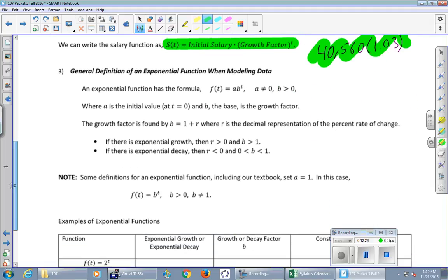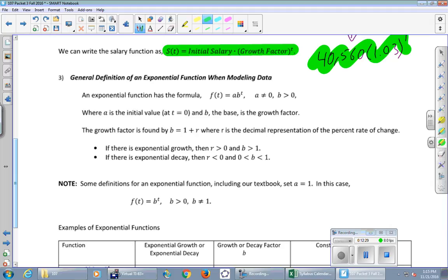So making this even more general, an exponential function, this is a brand new definition, exponential function has this form: f of T equals A times B to the T. A times B to the T. Up above, what was playing the role of A? The 40,000 or the initial salary. And then B, what was playing the role of B? That's the growth factor, which was the 1.03. See it? And then T is just time, and that's the independent variable. So A and B are constants. They're numbers, like 40,000 and 1.03. T is the independent variable.